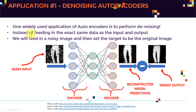Instead of feeding in the exact same data as the input and output, we're going to feed in a noisy image and then set the target to be the original image. Here we have our autoencoder — we have our encoder network, then the code layer, followed by our decoder network.